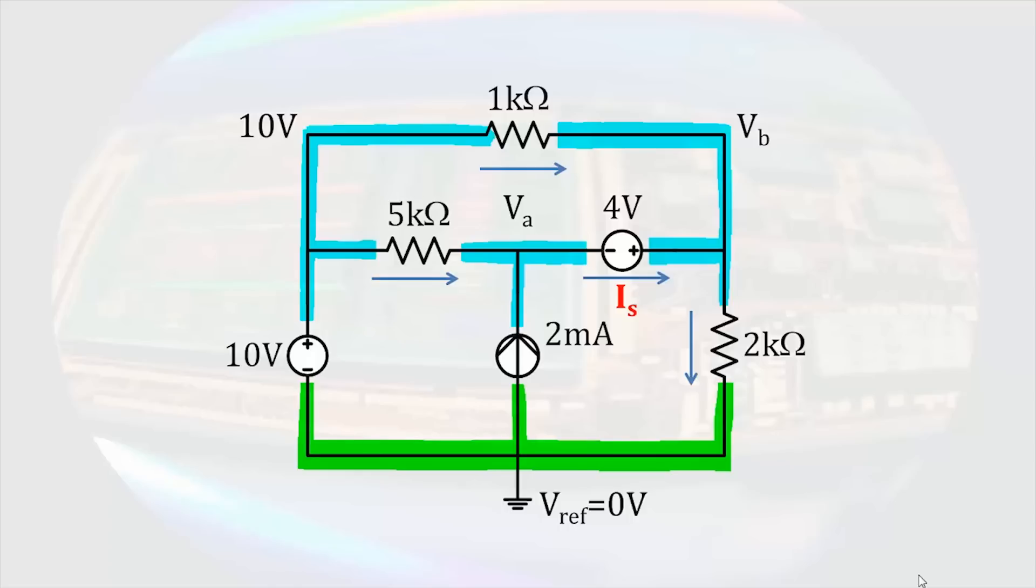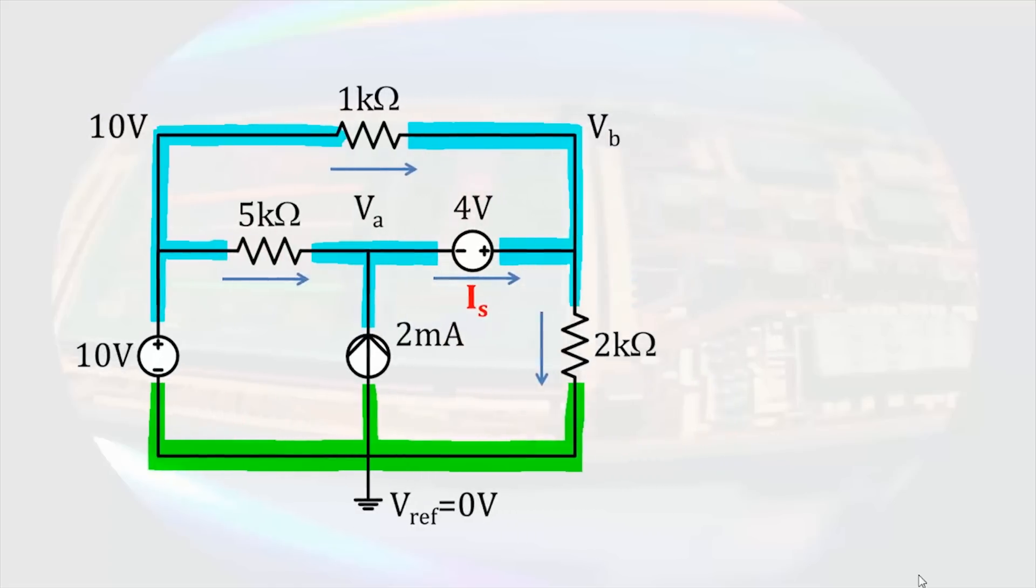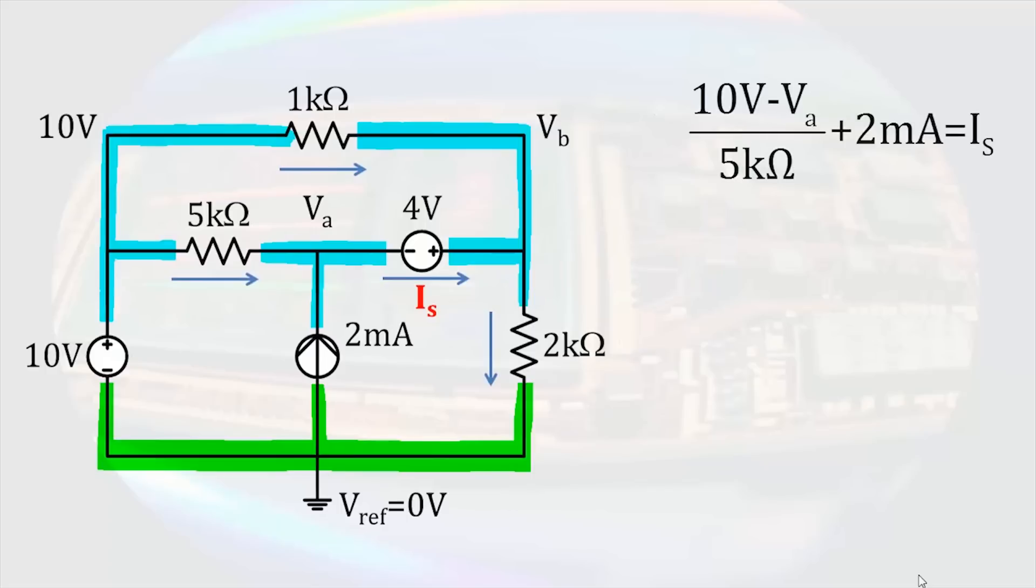At node A, we have the current through the 5 kilo-ohm resistor and the 2 milliamp current source entering the node, while the current IS leaves. So we can write 10 volts minus VA divided by 5 kilo-ohms plus 2 milliamps equals IS.